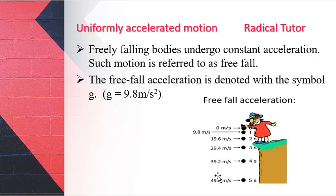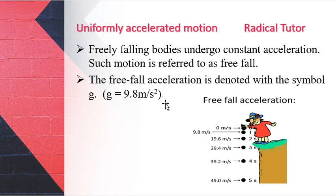A free-falling object experiences constant acceleration. The free-fall acceleration is denoted by g, which is acceleration due to gravity, equal to 9.8 meters per second squared.